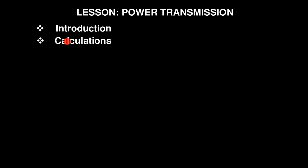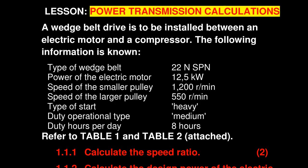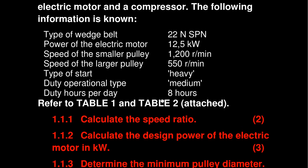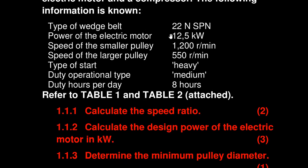It says a wedge belt drive is to be installed between an electric motor and a compressor. The following information is given in the form of a table. Number one: calculate the speed ratio.